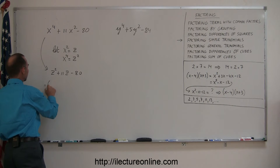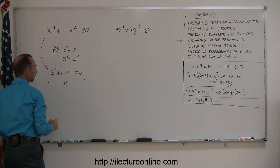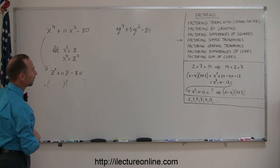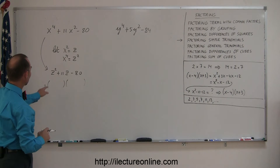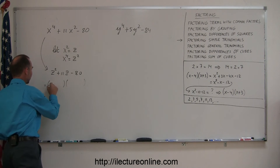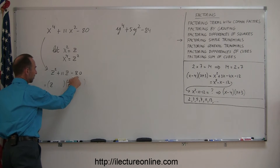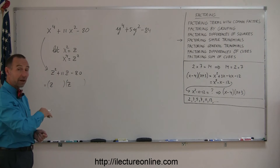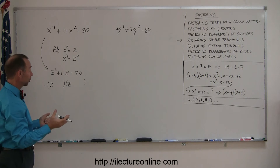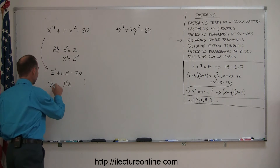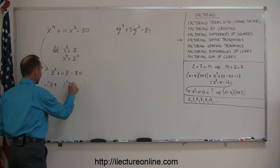So this is now equal to the product of two binomials, and since we have a z squared here we want to write a z and a z.